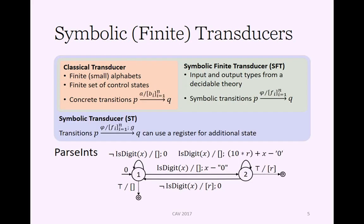A symbolic finite transducer is a similar kind of generalization, where also the output alphabet is replaced by a type from this decidable theory. Now the symbolic transitions also have this list of output functions, which can depend on the input to produce the output. Finally, a symbolic transducer also has a register for additional states, which it can use in the transitions and can update.